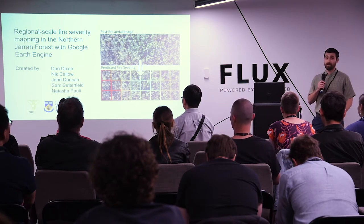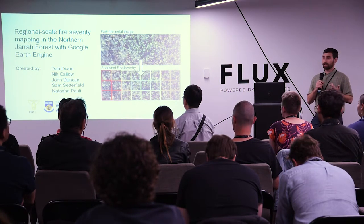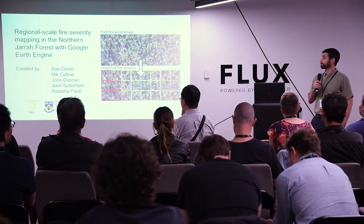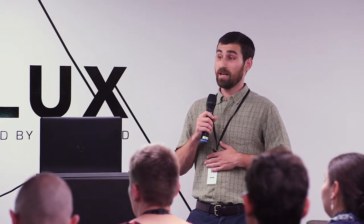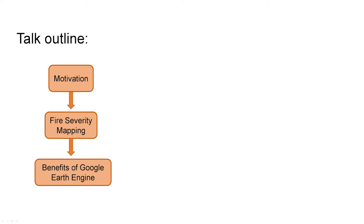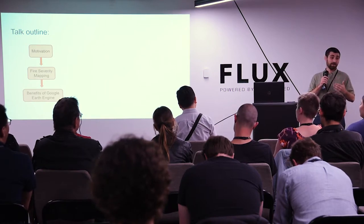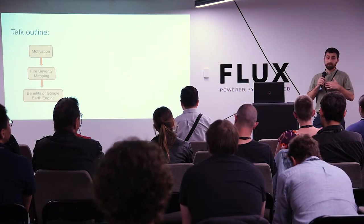Essentially, I'm taking post-fire aerial photos and using those images to train a machine learning model to predict the severity of fire — the impact of fire on forest canopy at a 30 by 30 meter resolution using mainly Landsat. In this talk, I'll first go over the motivation, get into the guts of how the fire severity mapping works, and then talk about some of the benefits of using Google Earth Engine — a global scale image processing and GIS environment to ask questions without scale.